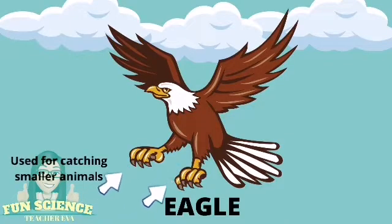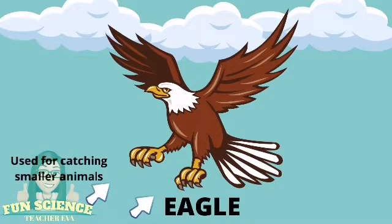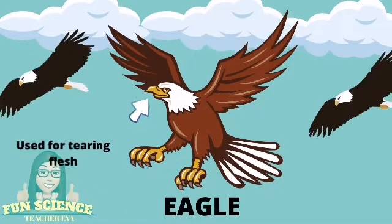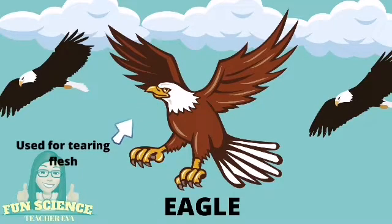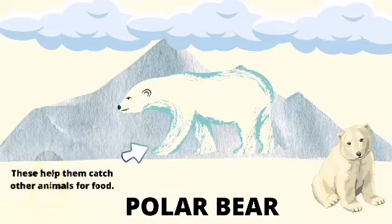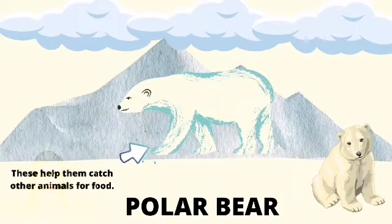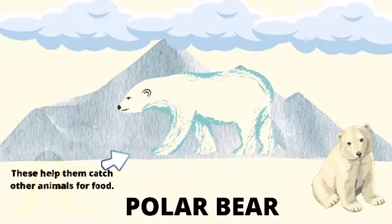Eagles have claws for catching smaller animals. They also have sharp, hooked beaks for tearing flesh. Polar bears have claws with curved, sharp nails. These help them catch other animals for food.